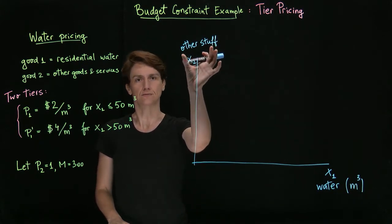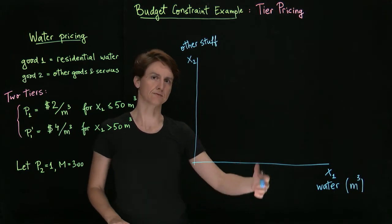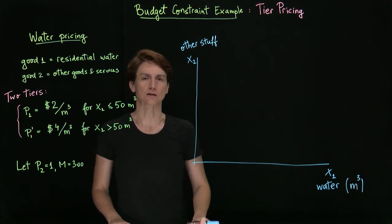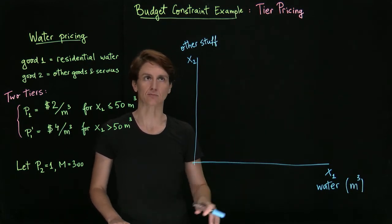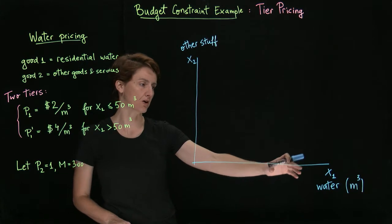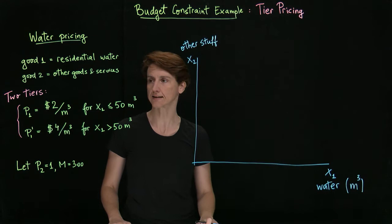So really the good on the vertical axis will simply stand for money you have left to spend on other things. We also sometimes call it the composite good, but that's not important. In any case, we're going to focus on the pricing of water, so that's the good we're putting on the horizontal axis.